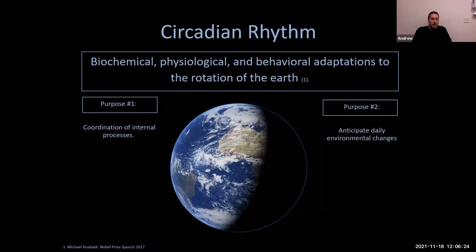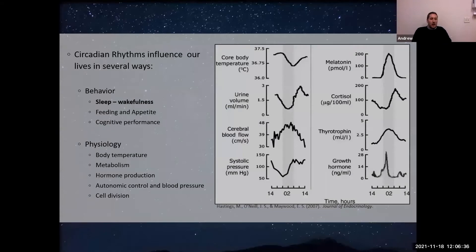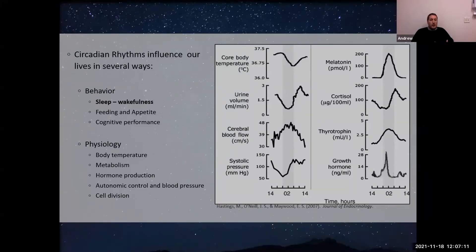The circadian rhythm has a twofold purpose: to coordinate our complex internal biologic processes and to anticipate consistent daily environmental changes. These include things we're very aware of — like our sleep-wake cycle, metabolism, and appetite — but also things we're less conscious of daily, like hormone production, waste excretion, autonomic regulation such as blood pressure, and even cell division. Almost every aspect of our biology operates on a circadian cycle.